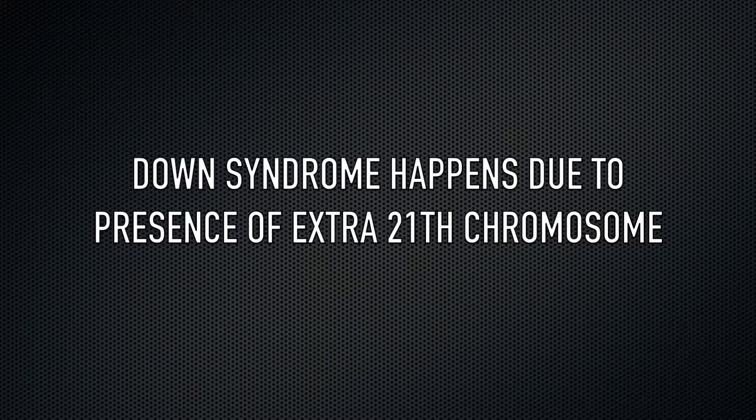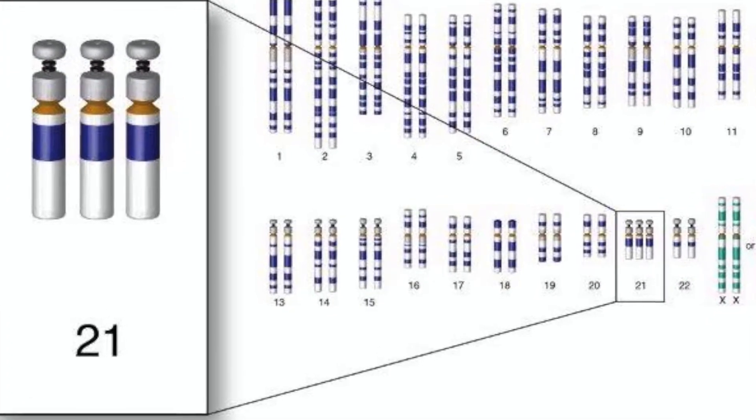Coming to the causes of Down syndrome — the reason why Down syndrome happens is because of the multiplication or presence of an extra 21st chromosome. Chromosomes are the genes that are present in our body. Human beings have 23 pairs of chromosomes, one from the father and one from the mother. Whenever there is an extra multiplication on the 21st chromosome following an abnormality, it leads to the condition called Down syndrome. This extra chromosome could be partial or full, and based on that the symptoms would be seen.